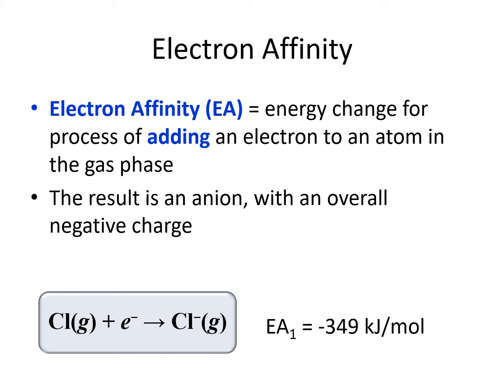Electron affinity is the opposite of ionization energy. Ionization energy is removing an electron, but electron affinity is adding an electron.